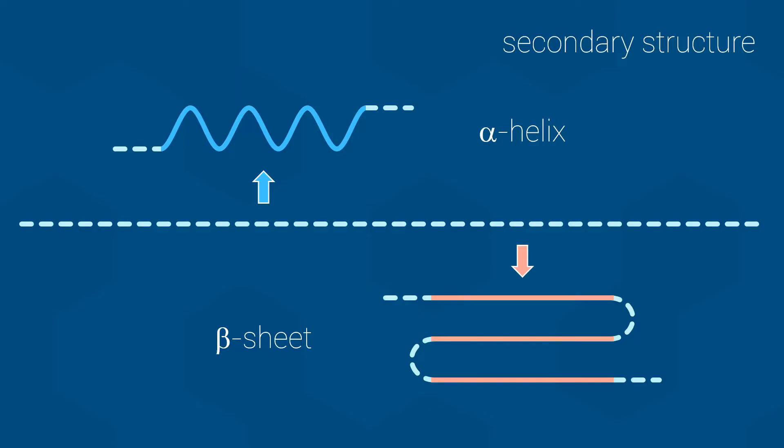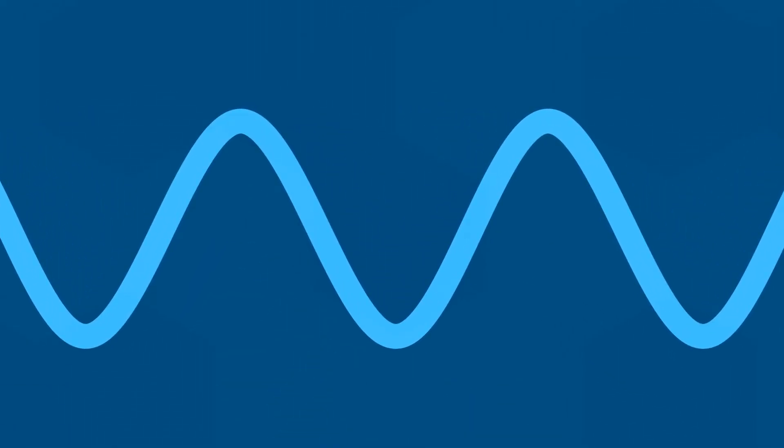Both alpha helices and beta sheets are held together by numerous hydrogen bonds between backbone atoms. The alpha helix hydrogen bonds run parallel to the long axis of the helix, as shown here.